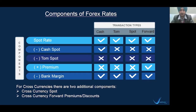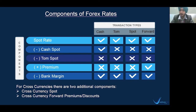Here are the components of Forex rates: spot rate, cash-spot, Tom-spot, premium, and bank margin. Spot rate is the basis of all types of transactions. Cash-spot is deducted only in cash-type transactions, and Tom-spot is deducted in Tom-type transactions, whether for importer or exporter. Premium gets added for both buying and selling currency. Bank margin is deducted for exporters and added for importers.